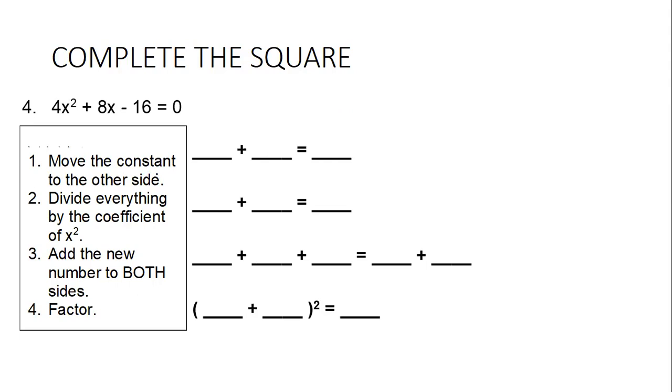Here we go. Step 1 is still to do what? Move the constant. So we need to move the negative 16. When I move negative 16, it's going to become a positive 16. Step 2 is to divide everything by the coefficient of x squared. What's my coefficient? 4. So I'm going to divide everything by 4. And what am I left with? x squared plus 2x equals 4.